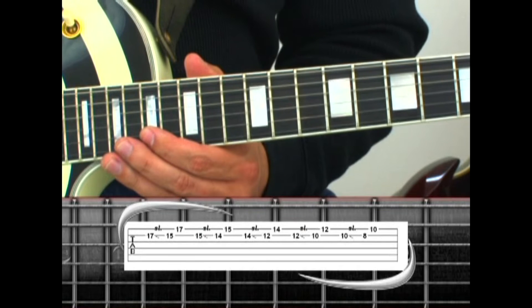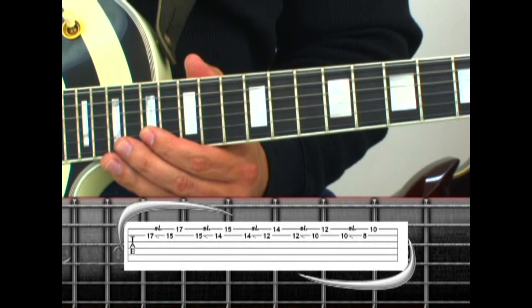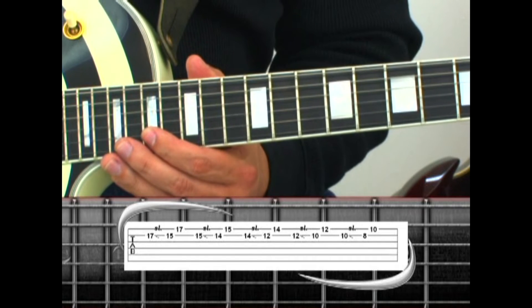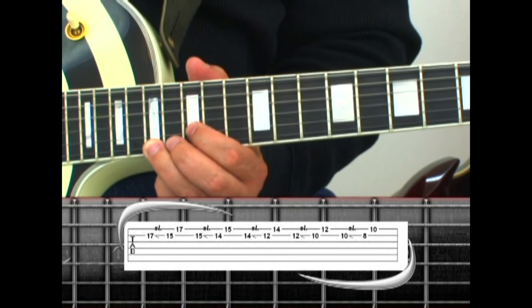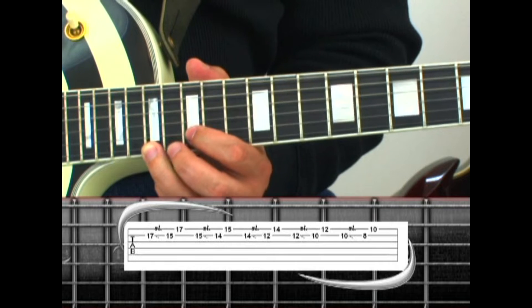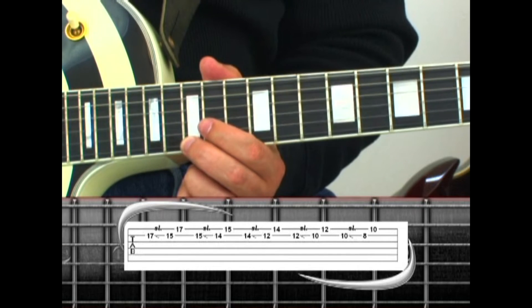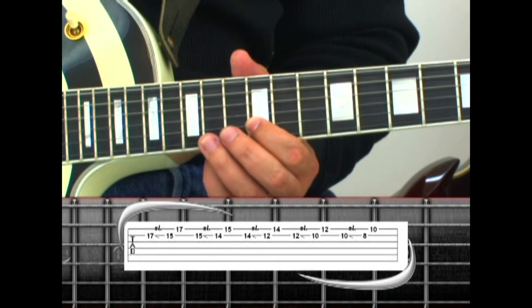Phrase 13 starts off with a series of slides down the 2nd string ending on a 1st string note. First we have the 2nd string 17, 17, slide to 15, end on the 1st string 17. Keep your fingers in place and play 15, slide to 14, end on the 1st string 15, 14, slide to 12, end on the 1st string 14,